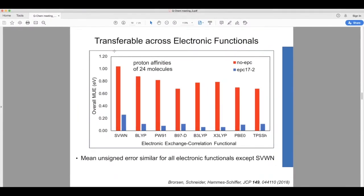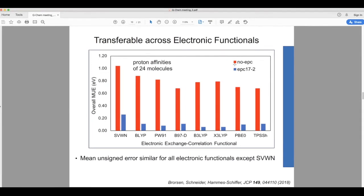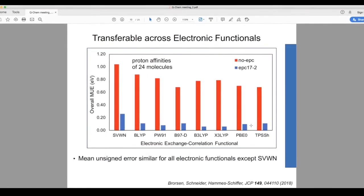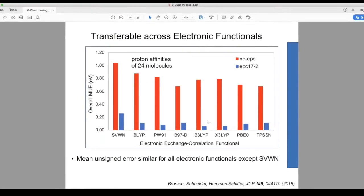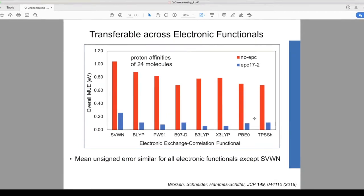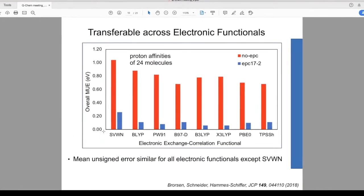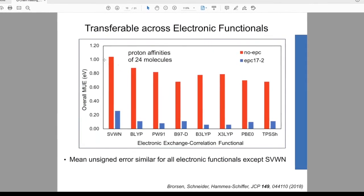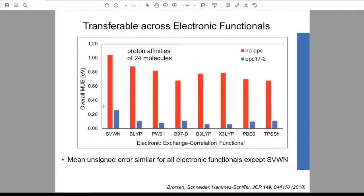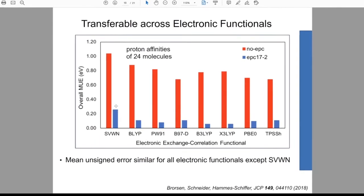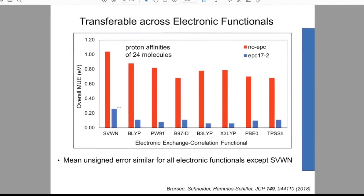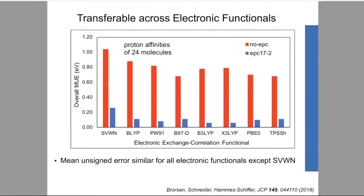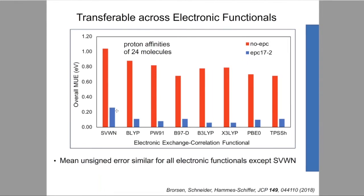The EPC functionals can be used with a wide range of electronic exchange-correlation functionals. The mean absolute errors are similar for all electronic functionals shown, except SVWN. Because SVWN without EPC also gives higher mean absolute error, the higher error observed with EPC-17-2 using SVWN is most likely due to the inherent limitations of SVWN rather than the EPC functional itself.